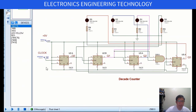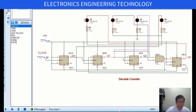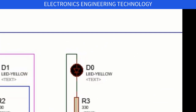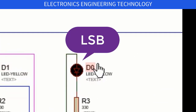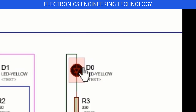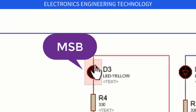Simulating this circuit will show the outputs displayed by four LEDs D0 to D3, with D0 representing the least significant bit or LSB, while D3 represents the most significant bit or MSB.